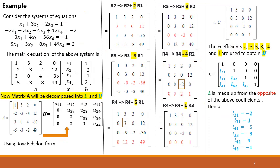Consider this system of equations, which has four rows and four columns. The matrix equation of the above system is written as Ax equal to B. Now matrix A will be decomposed into lower triangular matrix L and upper triangular matrix U. We will first take matrix A and bring it into upper triangular form, where all elements below the diagonal are equal to zero.